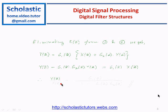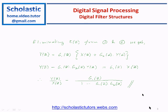By ordering the elements we can get y(z) over x(z) equal to g1(z) divided by 1 minus g1(z) times g2(z). That is the answer — a simple feedback digital filter structure. The feed forward element is g1(z), feedback element is g2(z), and this is the transfer function of that particular digital filter.